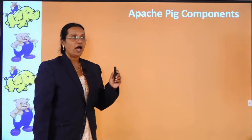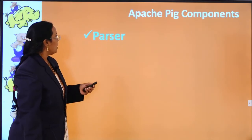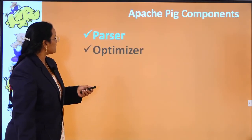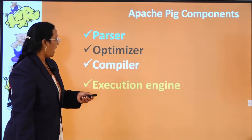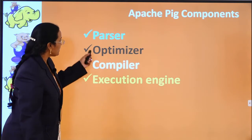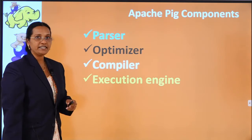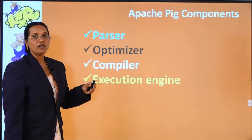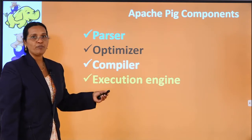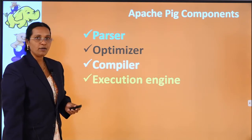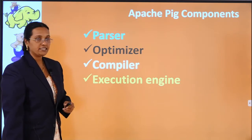Let us see about the Apache Pig components. There are four important components: the parser, optimizer, compiler, and execution engine. These are the four important components of the Pig architecture, as whenever the programmer writes Pig scripts, the entire job is done by these components. Let us see in detail what is the parser, optimizer, compiler, and execution engine.